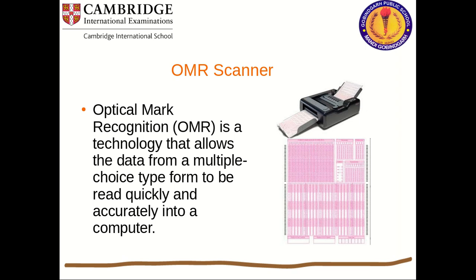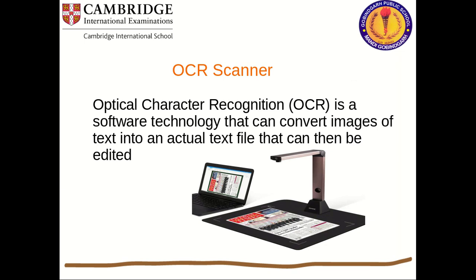OCR — Optical Character Recognition — is a software technology that can convert images of text into actual text files that can then be edited. Suppose you have material in a book and want to type it; instead of using a keyboard, an OCR scanner reads the book's characters and converts the image of the page into editable characters. If you just take a photo of the page with a camera it won't be editable, but OCR makes that image editable.